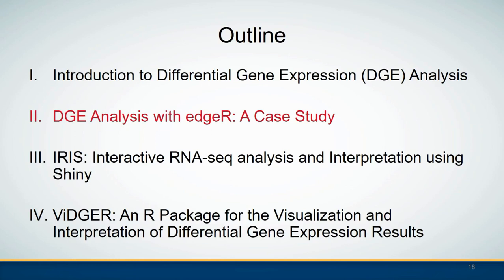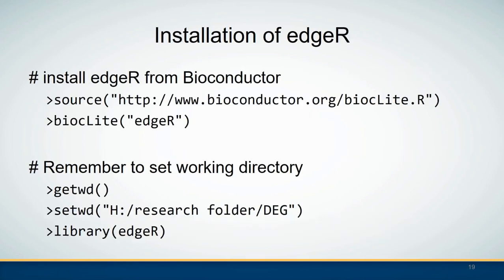In the second section I will show you how to use edgeR to perform DGE analysis with an example. To install edgeR from Bioconductor you can run those two lines in R. Always remember to set your working directory — using getwd() you can check whether the current folder is where your data is located, and setwd() can set your desired working directory. The library() function loads the package for use in the current session.